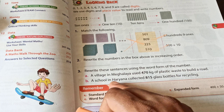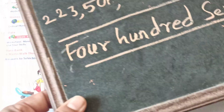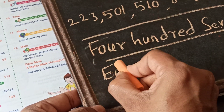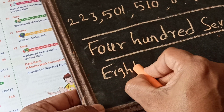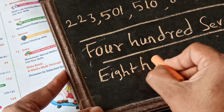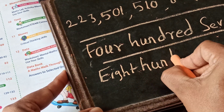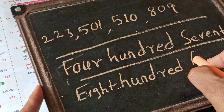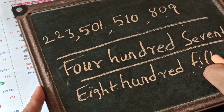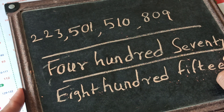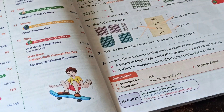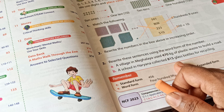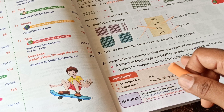Sentence B: A school in Haryana collected 815 glass bottles for recycling. 815 — 8 hundred is E-I-G-H-T H-U-N-D-R-E-D, and 15 is F-I-F-T-E-E-N. So we write: eight hundred fifteen. A school in Haryana collected eight hundred fifteen glass bottles for recycling.